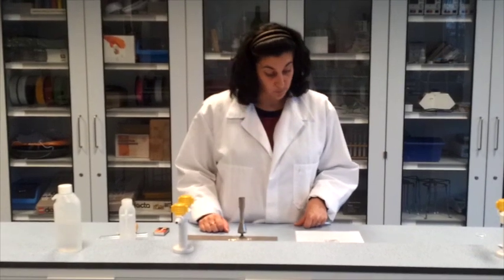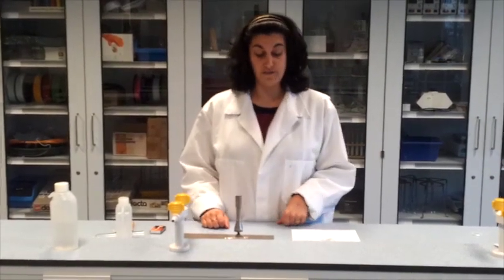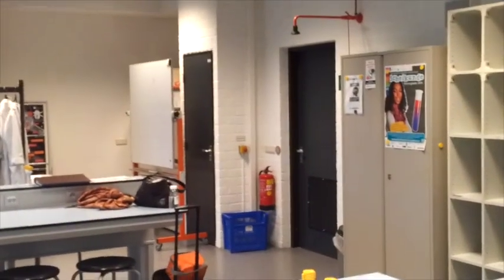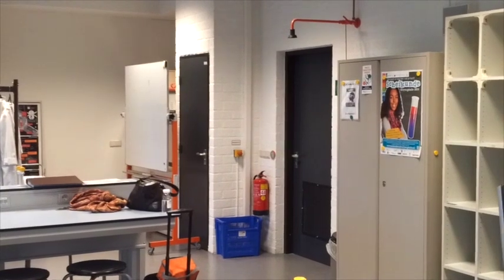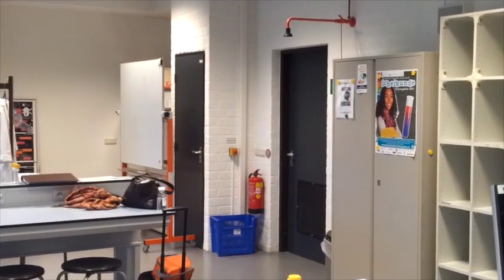First of all we need to check the safety measures. We need to check the location of the fire extinguisher and the shower. In the science lab they are over there and in room 101 they are also just by the door. We also check where the fire blanket is in case someone catches fire.